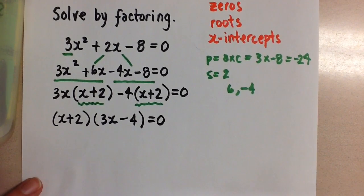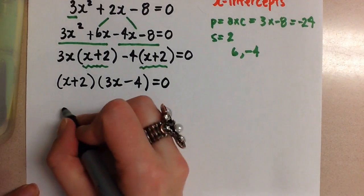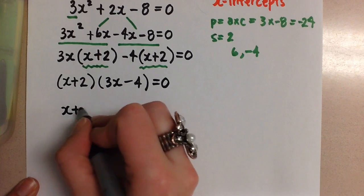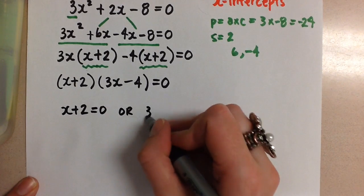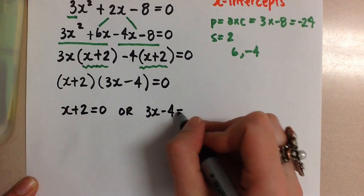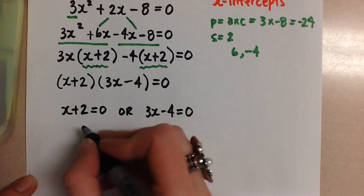So now that I've factored the equation to solve for x, I know that means x + 2 has to equal 0 or 3x - 4 has to equal 0. So I solve these two linear equations.